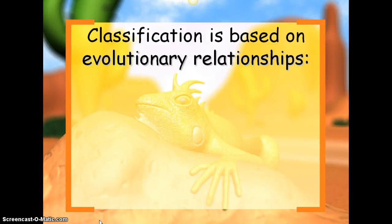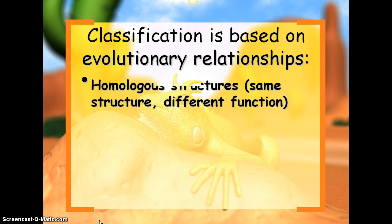Hi class, today we're going to continue on in our classification section for chapter 17. We're going to get a little more detail on how organisms are classified. Classification is based on evolutionary relationships, so we're looking at individuals and how they're related to others based on the change over time, or evolution, of those organisms.